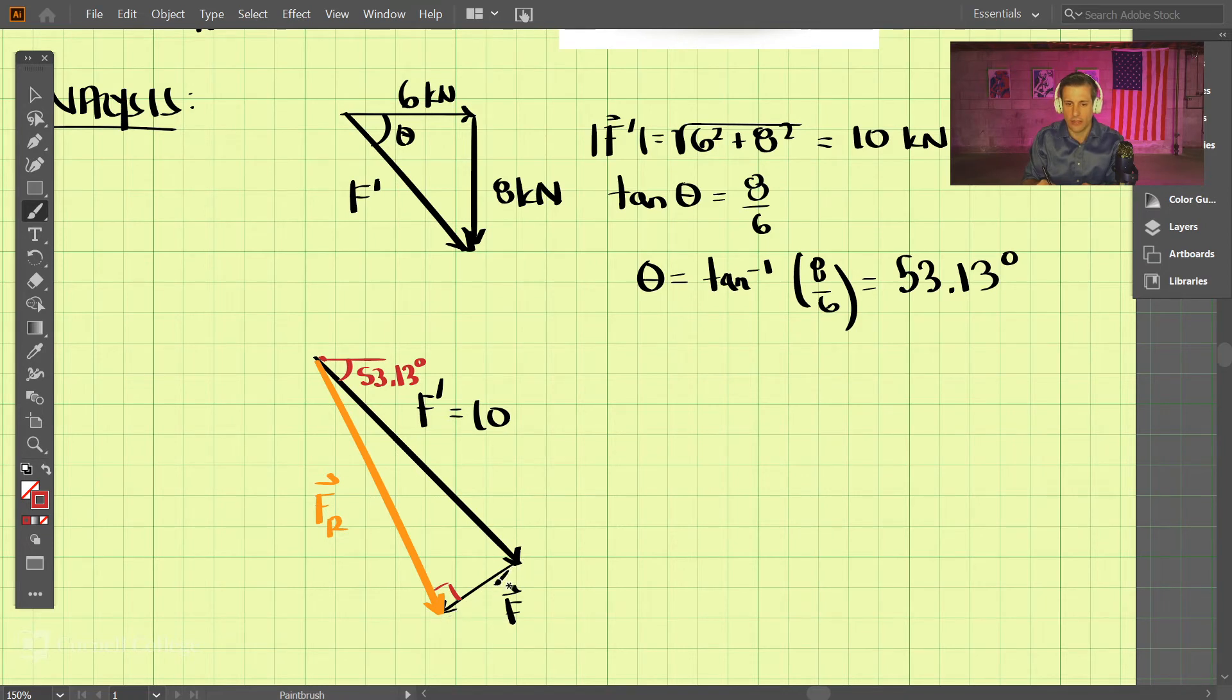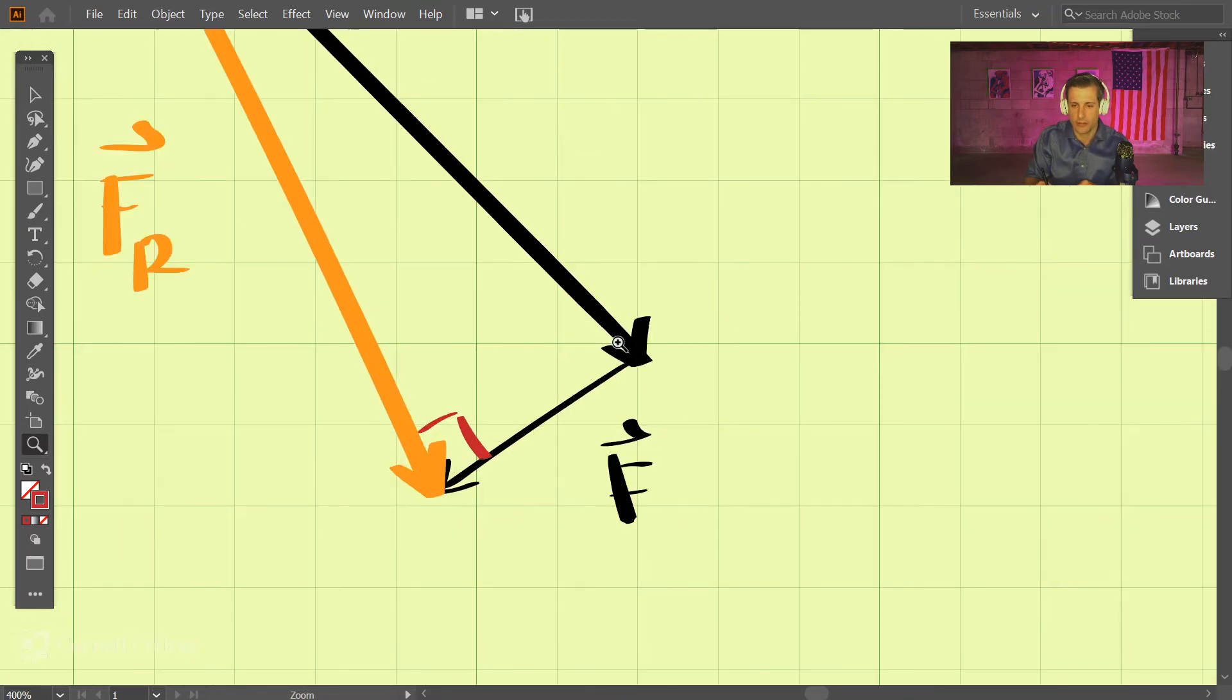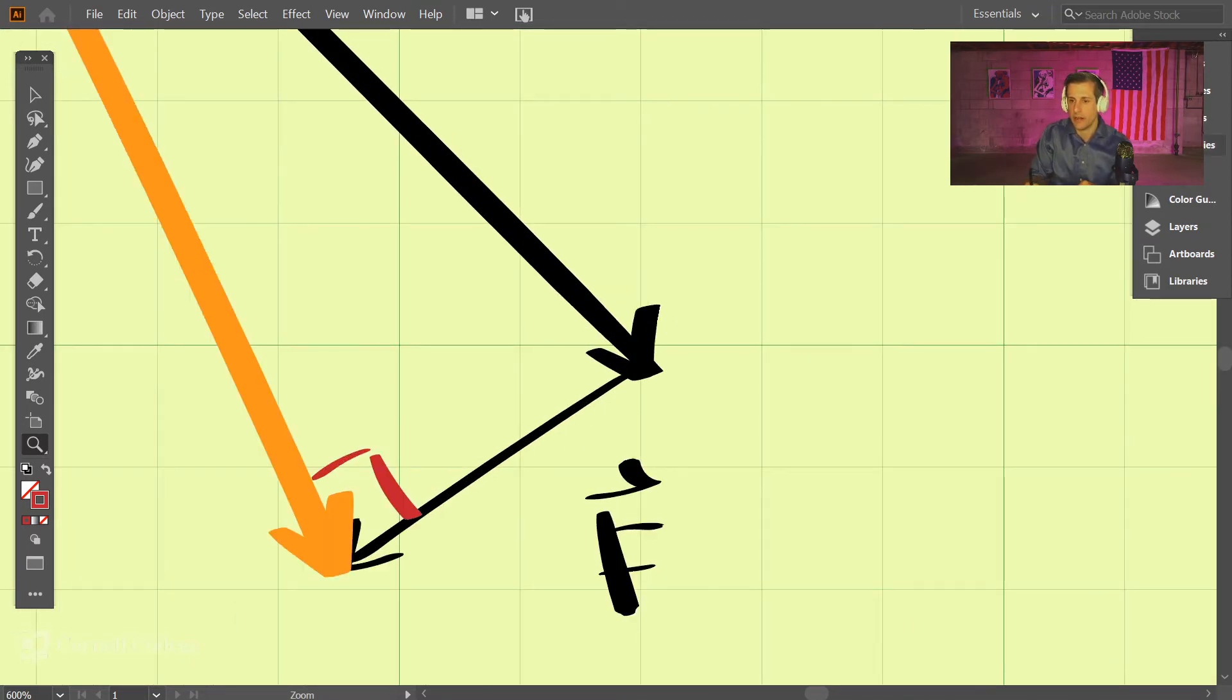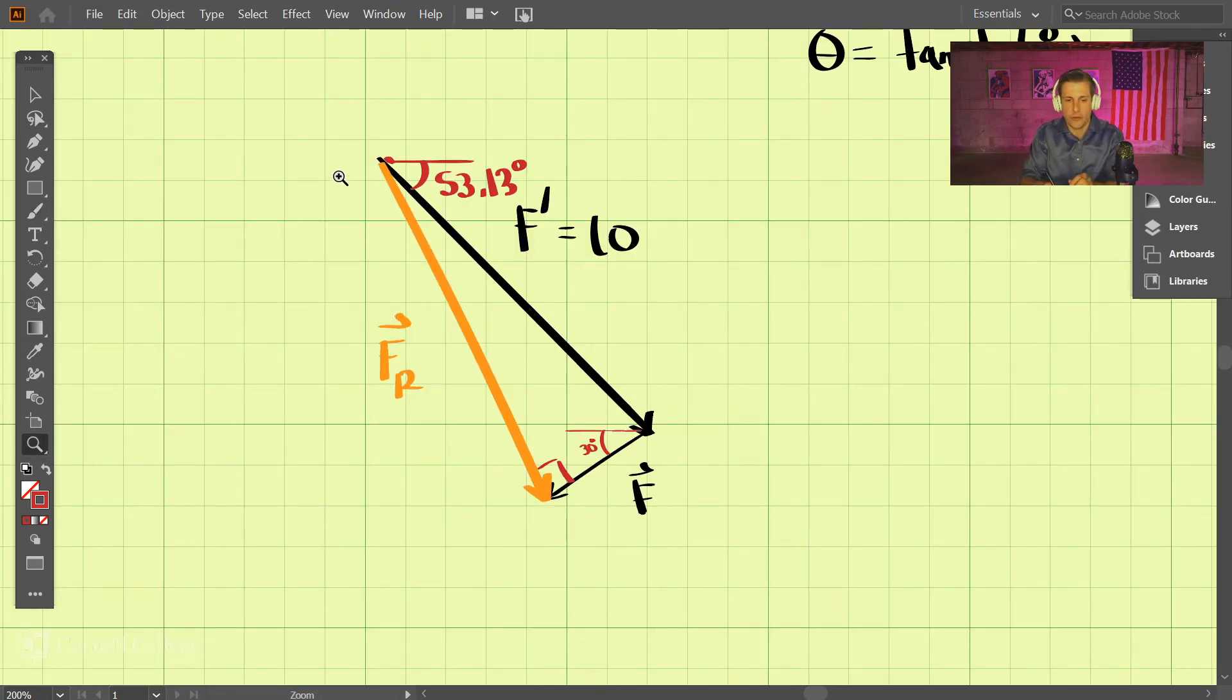And we know F is acting 30 degrees down from horizontal. So let's zoom in there and see if we can draw this out. Zoomed in, from horizontal here, we know that this is 30 degrees. So what is this angle up here?